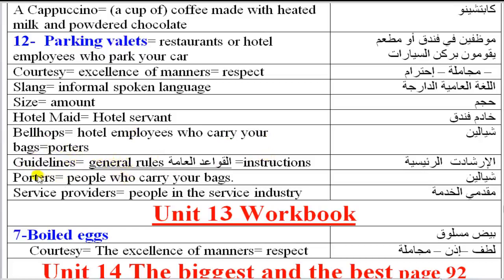Bellhops are hotel employees who carry your bags — also called porters. Guidelines means general rules or instructions. Porters are people who carry your bags. Service providers are people in the service industry.